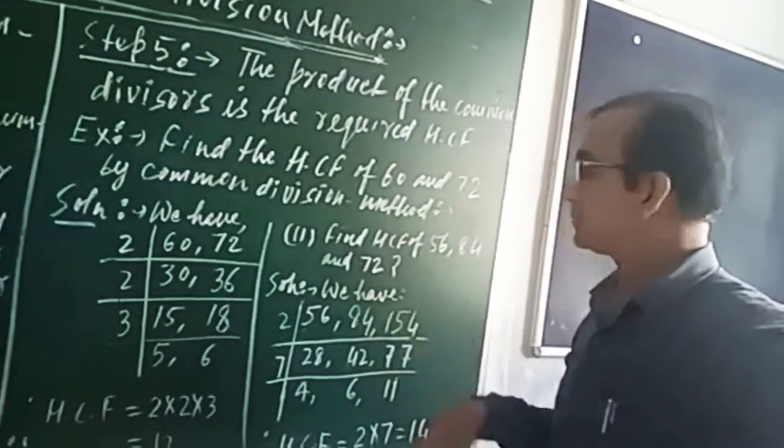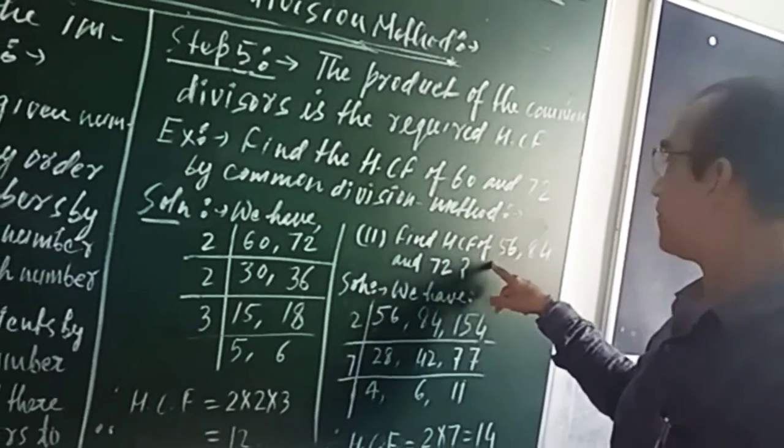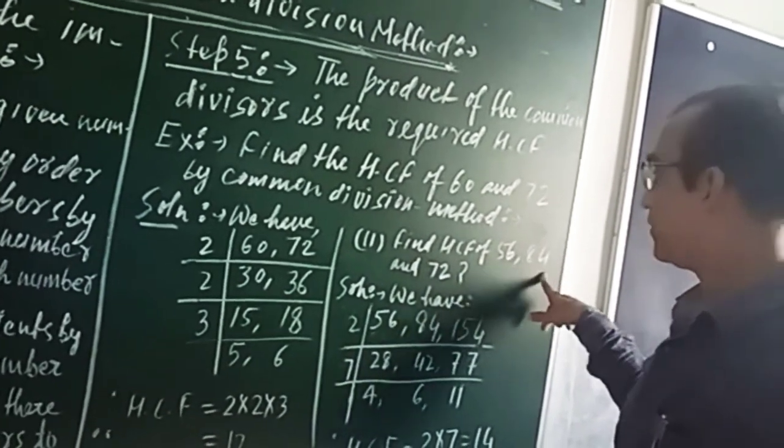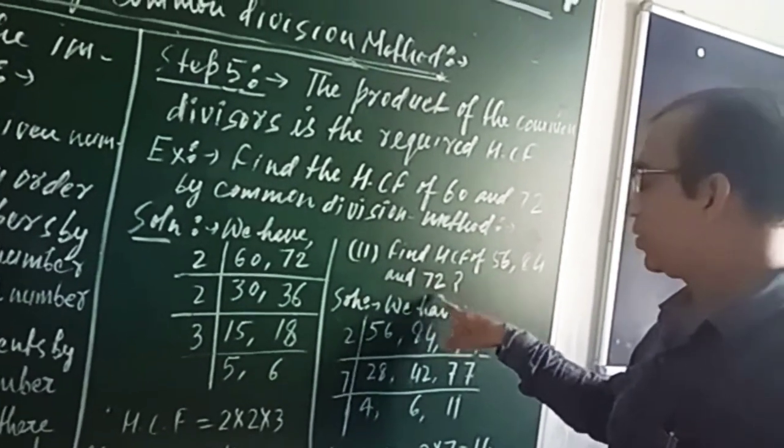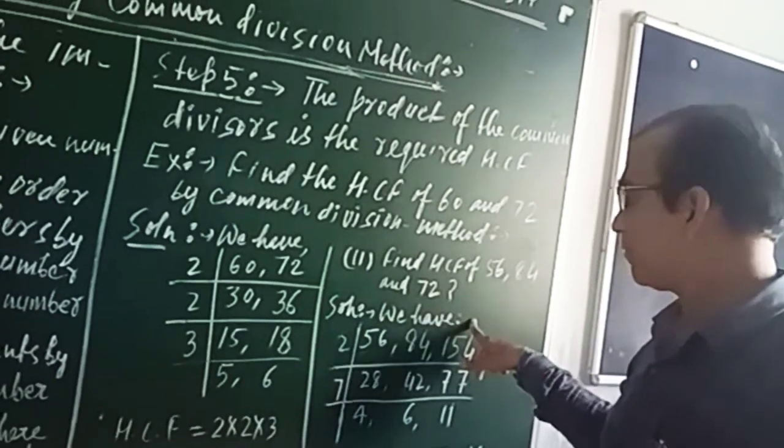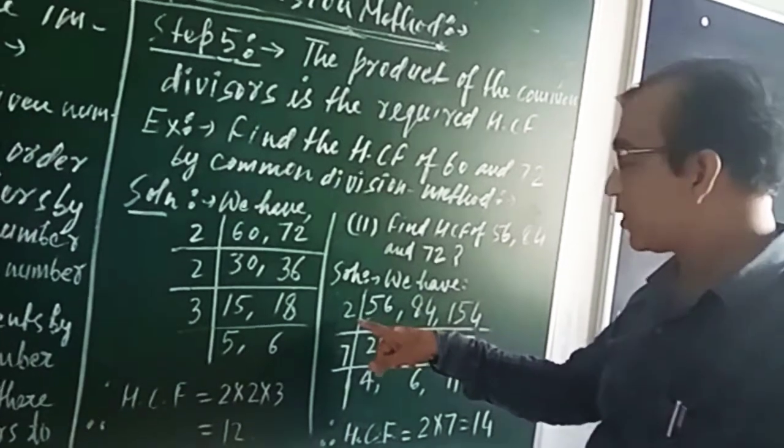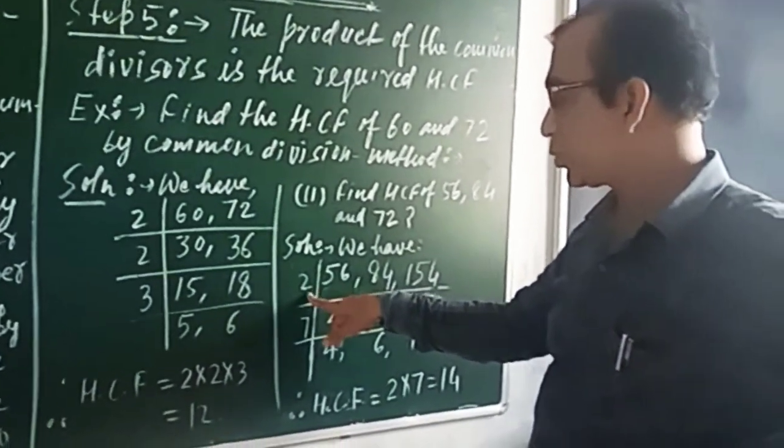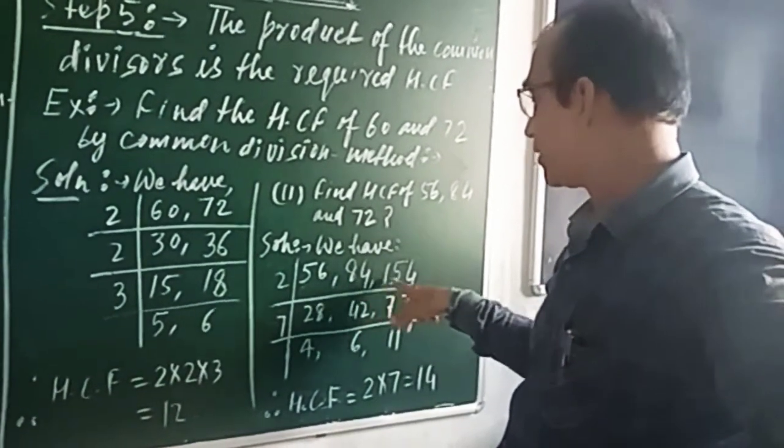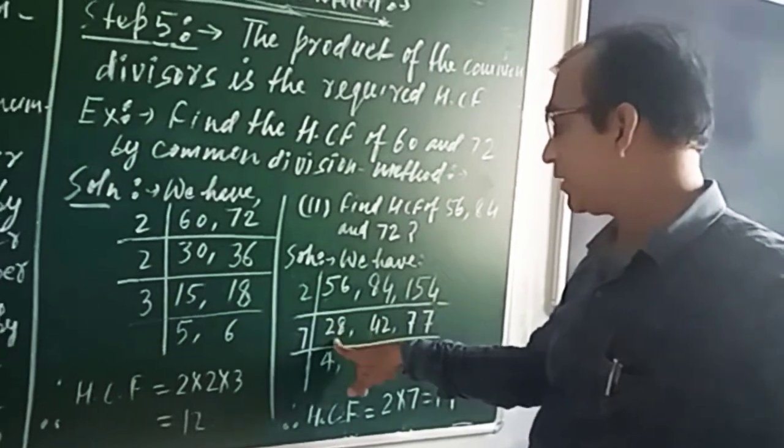Now comes the second example. Find the HCF of 56, 84 and 154. Solution: We have 56, 84 and 154, so the smallest common prime number divisor is 2. So divide 56, 84 and 154 by 2, we will get 28, 42 and 77.